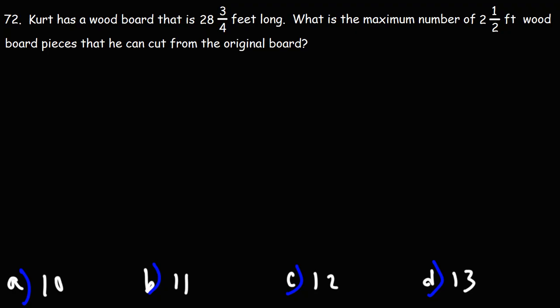So to find the maximum number of wood board pieces, we have to divide them. If we take the total length of the original wood board and divide it by the length of the small wood board pieces, that's going to give us the number of wood board pieces that we can cut from the original board.